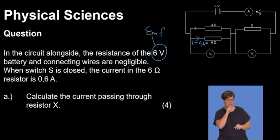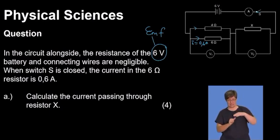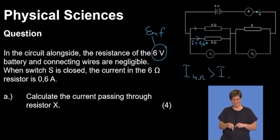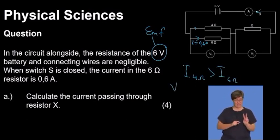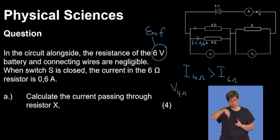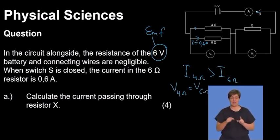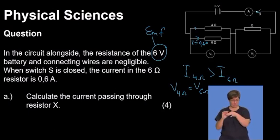It means the four ohm resistor will receive a current that is greater than that of the six ohms, because it has lesser resistance. In other words, the current for four ohms is greater than the current for six ohms. Why is this true? Because the voltage across four ohms equals the voltage across six ohms — the two resistors are connected in parallel. The only thing that differs is the current, because this parallel combination is a current divider.